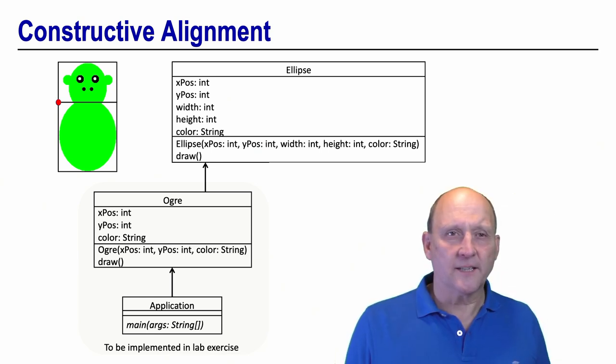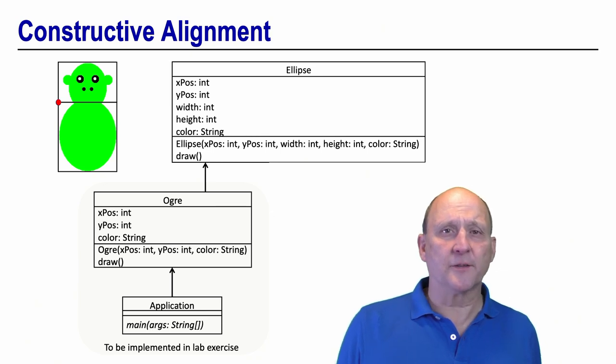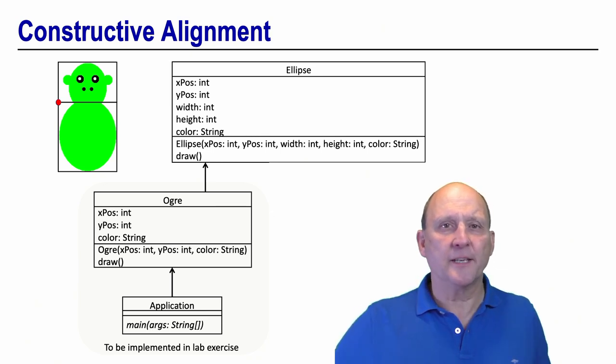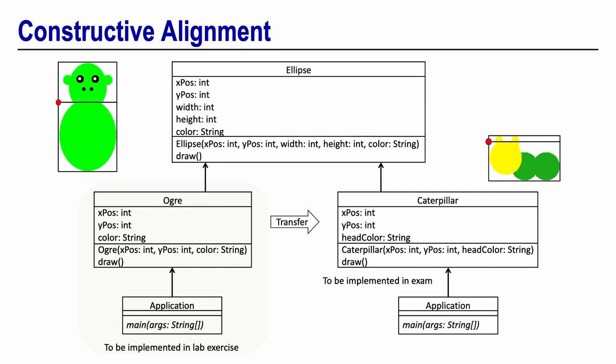The second task of the midterm exam was aligned then to this exercise in that it required the students to transfer from drawing ogre towards drawing caterpillars. Here again students had to decide whether to implement the ellipses as attributes of the ogre or to handle them as local variables.